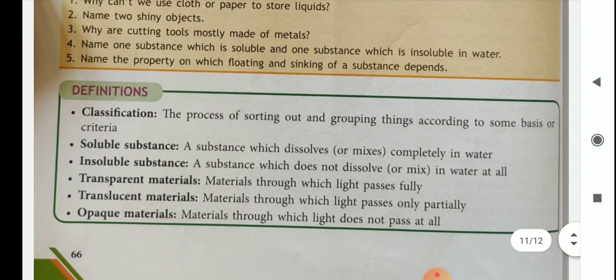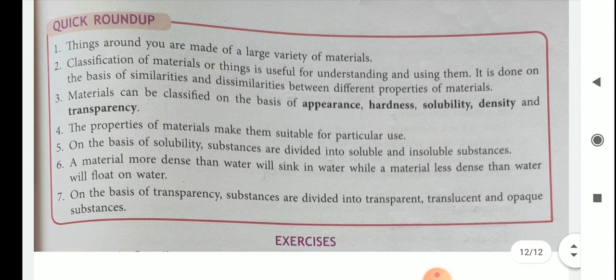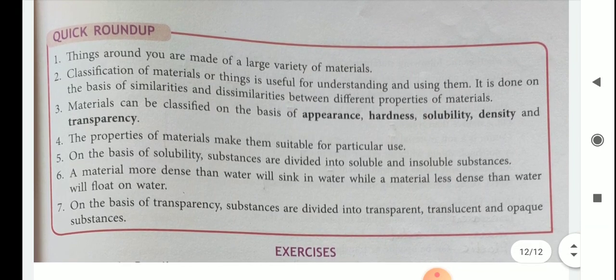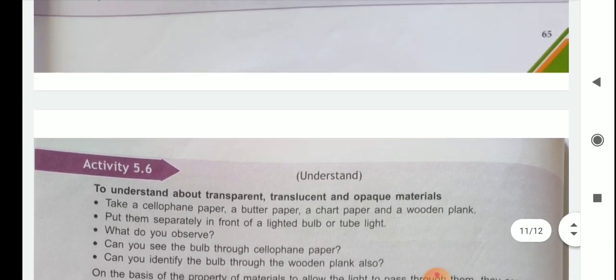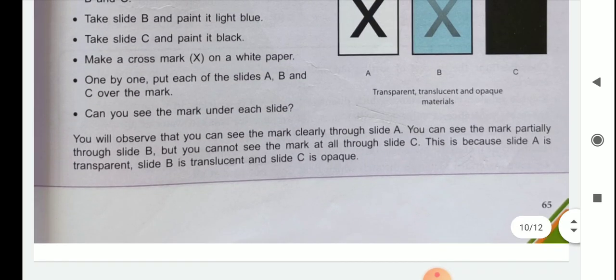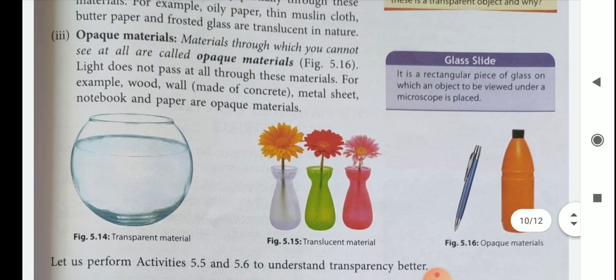These are some definitions you should read and remember: classification, water-soluble substance, insoluble substance, transparent materials, translucent materials, and opaque materials. These are the summaries of this chapter. Read this chapter again and learn all the properties of materials. Thank you.